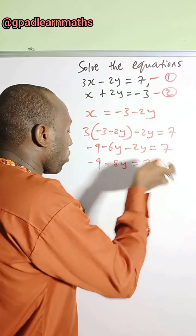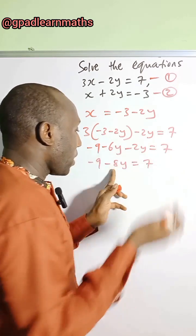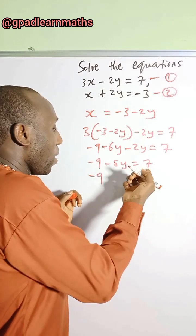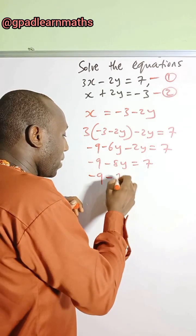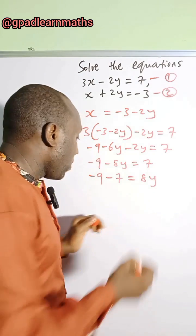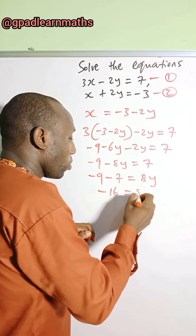Move this to this side. Or I can move minus 8y to the right hand side, just so that I can clear the negative sign. So minus 9 plus 7 here becomes minus 7. And this is now 8y. Minus 9 minus 7 is minus 16 is equal to 8y.